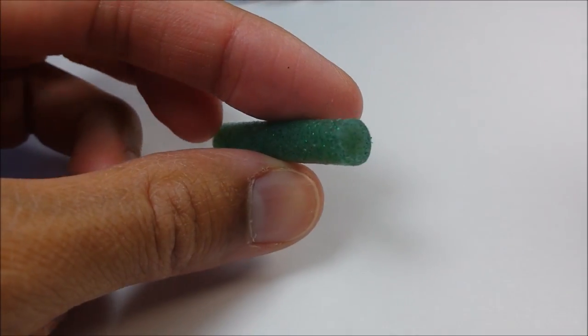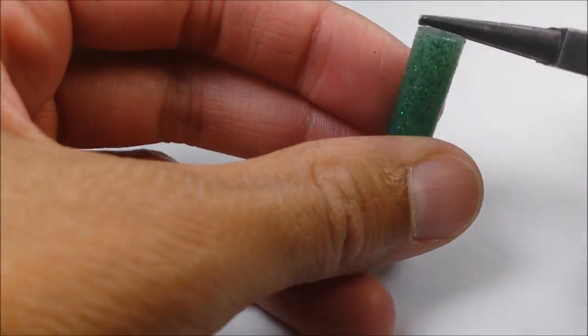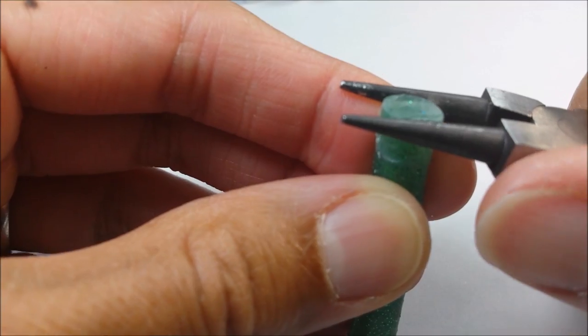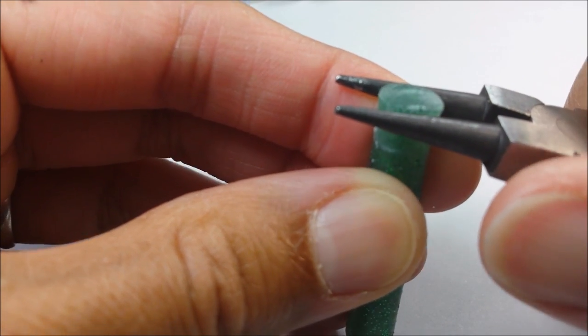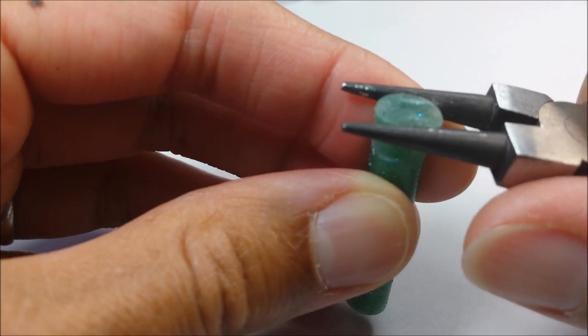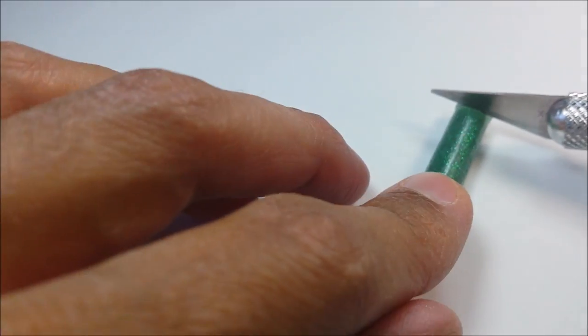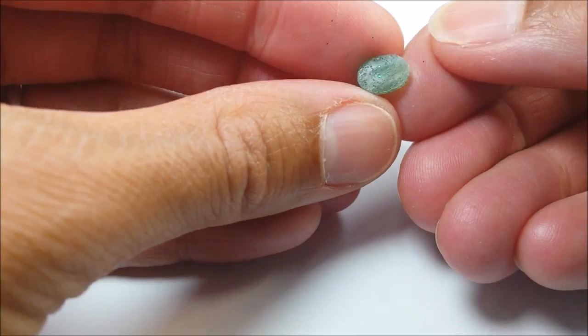And then for the soap, I'm taking a glue stick. And I'm just kind of squeezing it with my needle nose pliers into an oval shape. Cut it off. And you've got yourself a little soap.